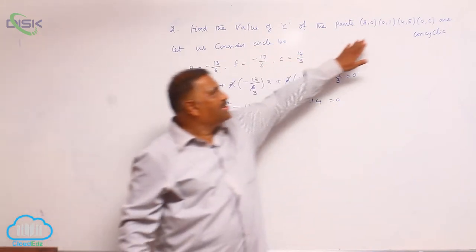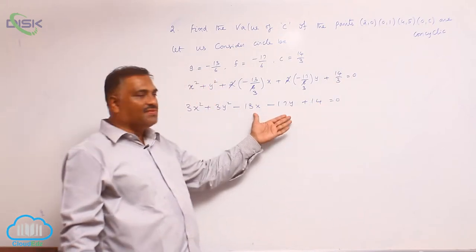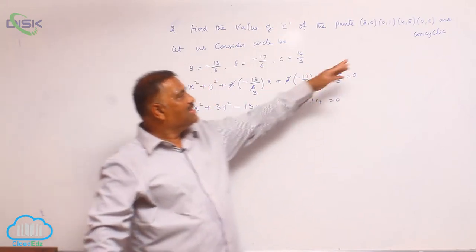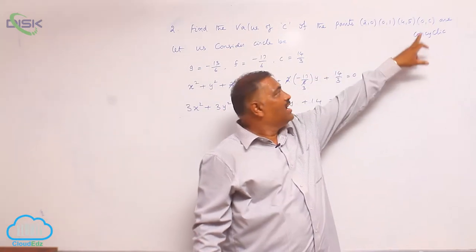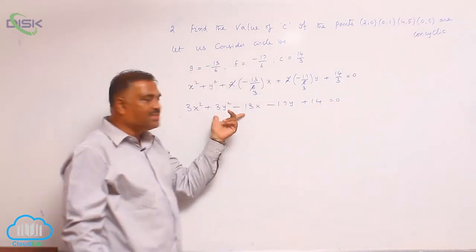Now, with first three points we got this equation of circle. Since the points are concyclic, the fourth point 0 comma c also lies on the circle.